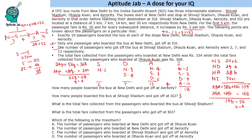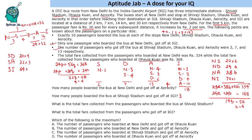What is the total fare collected from passengers who boarded at Shivaji Stadium? From Shivaji Stadium to Dholakunha is just 4 km, so ₹20, and there are 4 passengers — that is ₹80. From Shivaji Stadium to Aero City is 11 km: 5 km at ₹20 plus 6 km at ₹12 = ₹32, and there are 3 passengers — ₹96. From Shivaji Stadium to IGI we add a further ₹32, giving ₹64 per passenger, with 3 passengers — ₹192. Total comes to ₹368.